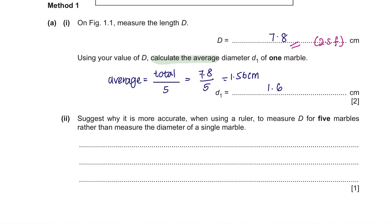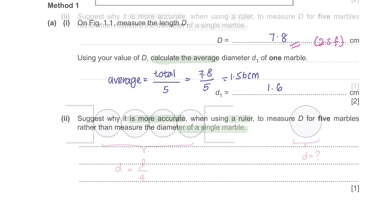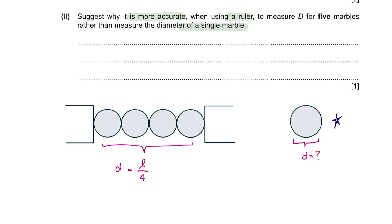Part 2. Suggest why it is more accurate when using a ruler to measure d for 5 marbles rather than measure the diameter of a single marble. Each marble is not designed 100% identical, therefore they might have a slight difference in their diameter. So, in order to be more accurate, we take the average of a few marbles. For your answer, you can say that the diameters of marbles can vary from one another.